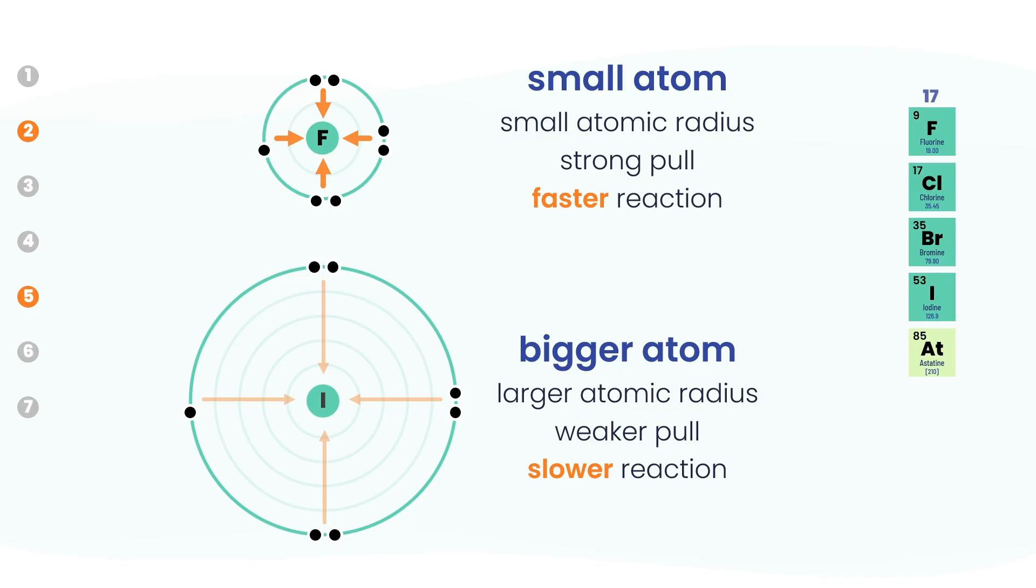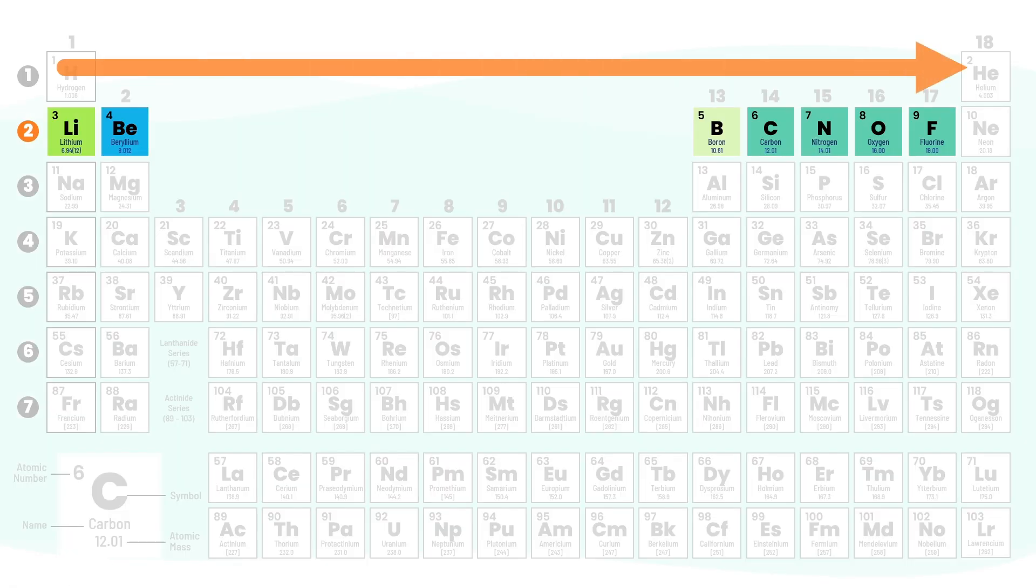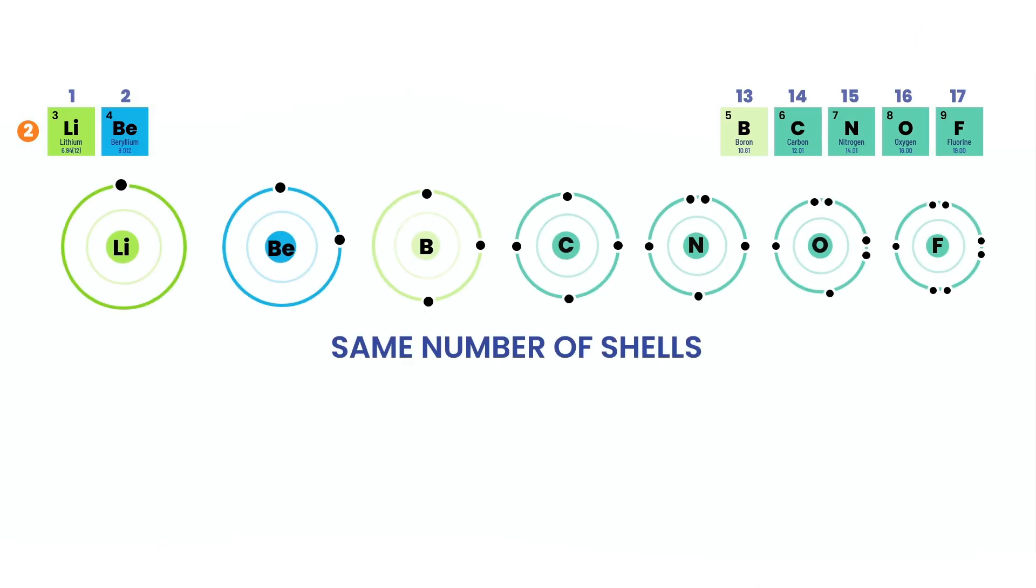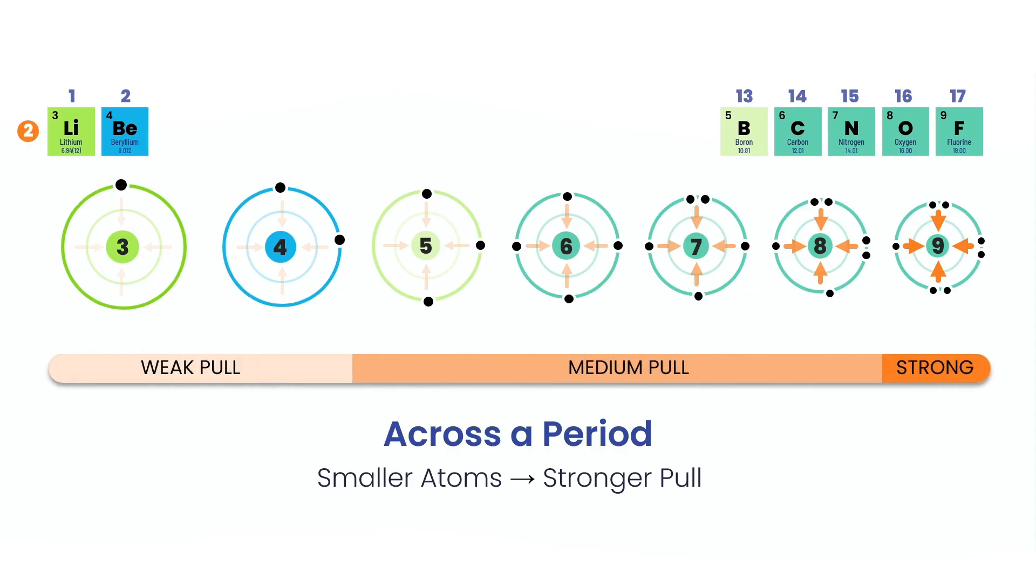But reactivity doesn't just change down a group. It also shifts as you move across a period. Now let's see what happens as we move across a period from left to right. A surprising thing happens - the atoms actually get smaller. Why? The number of electron shells stays the same but the nucleus gains more protons. Its positive charge grows stronger, pulling the electrons in more tightly. So even elements like boron, carbon, nitrogen and oxygen, not as reactive as fluorine, still have stronger pulls than the elements to their left. And that stronger pull changes everything. It makes gaining electrons easier and sharing electrons more likely. So across a period, atomic size shrinks but nuclear pull grows. And that increasing pull means a greater power to grab or share electrons. So remember, reactivity shifts not just down but across.